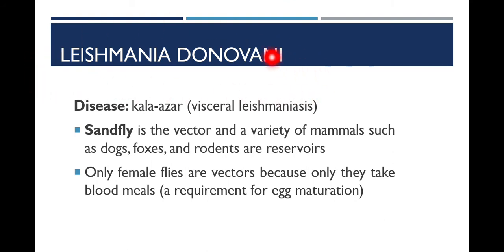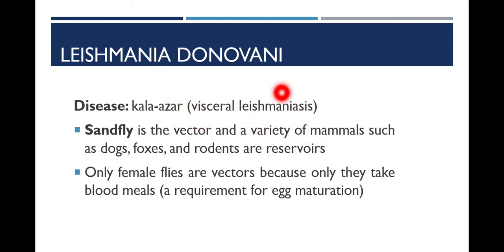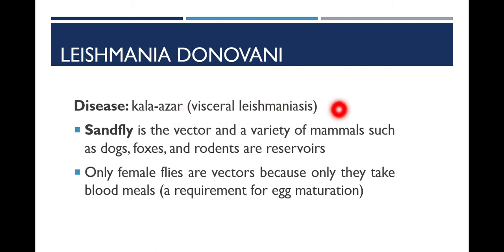First we will discuss Leishmania donovani. Leishmania donovani causes disease in different anatomical sites of the body, therefore this type of leishmaniasis is known as visceral leishmaniasis because it involves different viscera of the body. Historically it was called Kala-azar, which we will discuss in upcoming slides. Sand fly is the vector of Leishmania donovani.